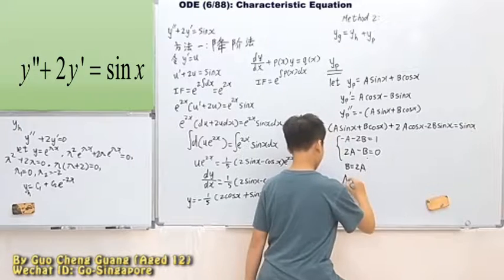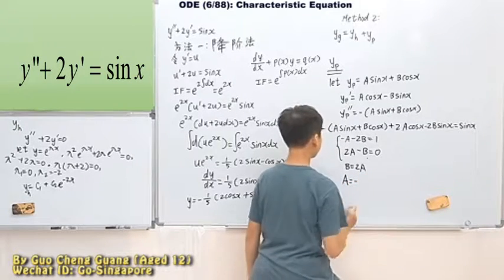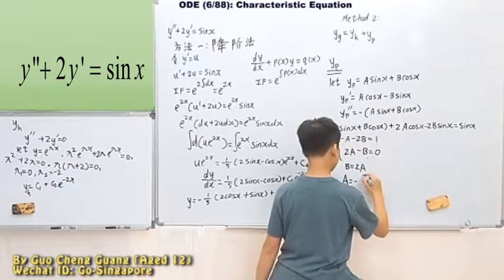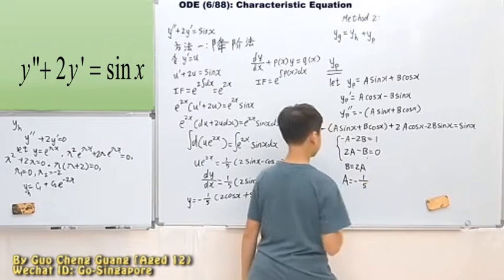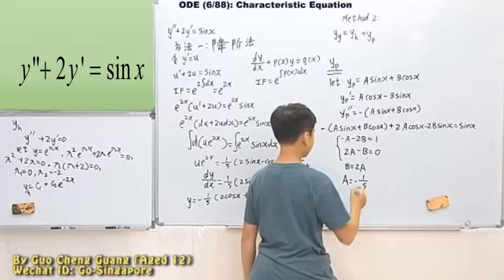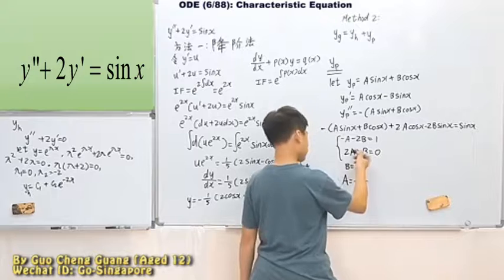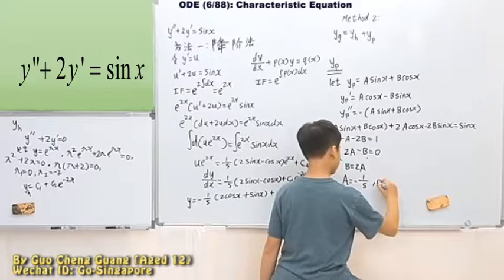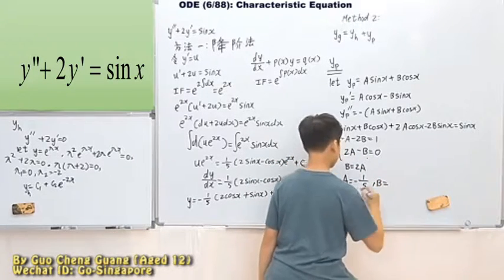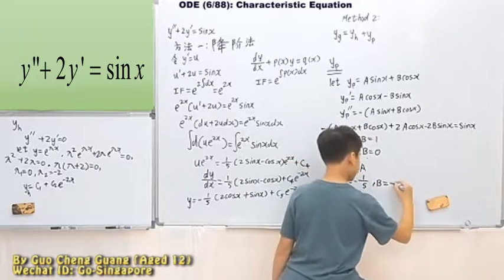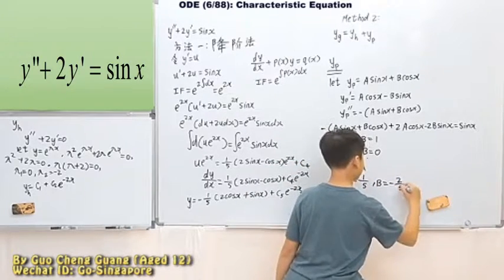So, what you'll get is a will be negative 1 over 5. Then, you can put this inside and find b. So, that means b is negative 2 over 5.